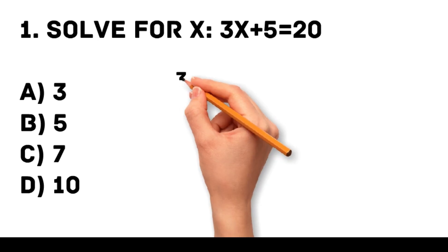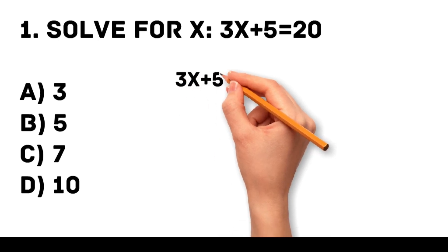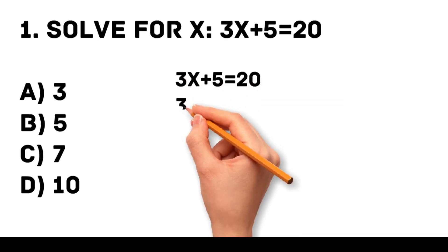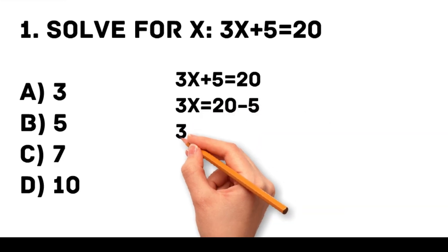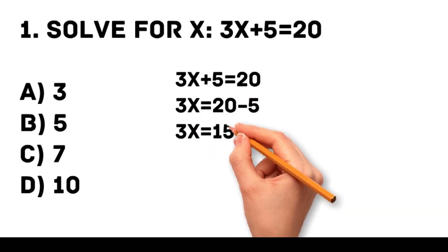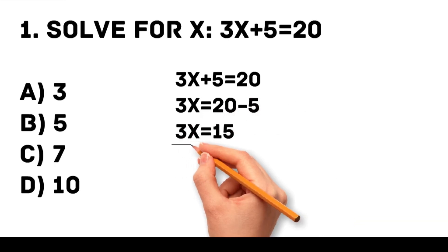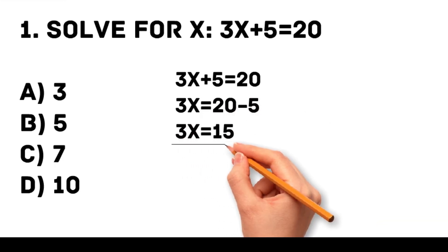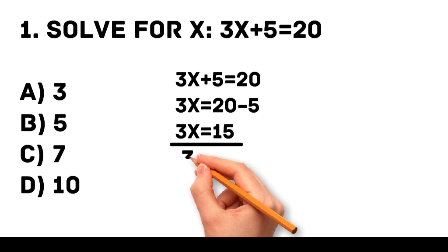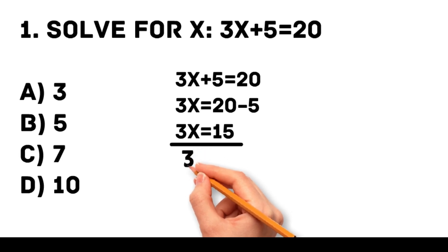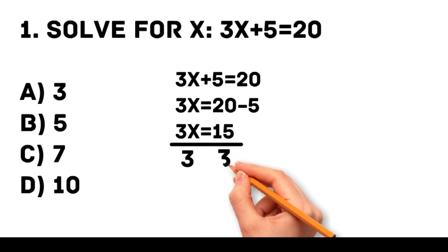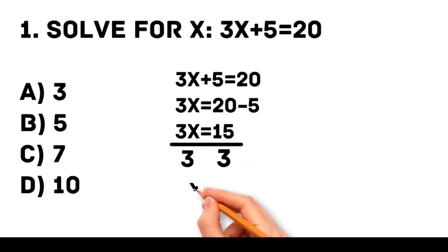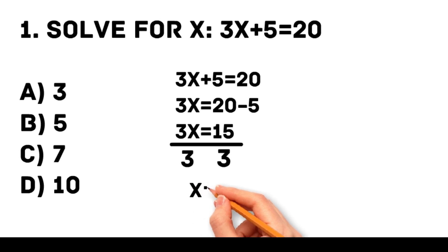To solve for x, first subtract 5 from the other side. 3x plus 5 is equal to 20 minus 5. Now it is 3x is equal to 15. Then divide both sides by 3. Therefore, x is equal to 5.